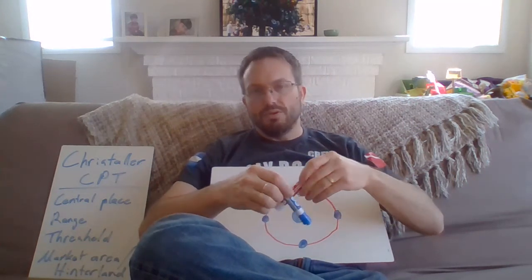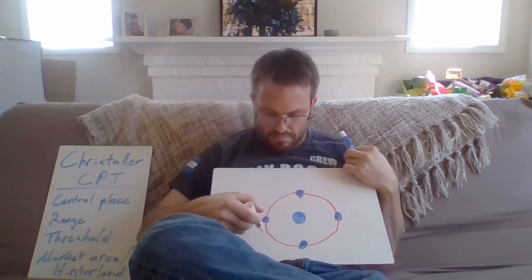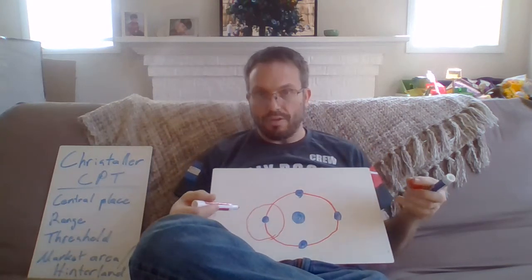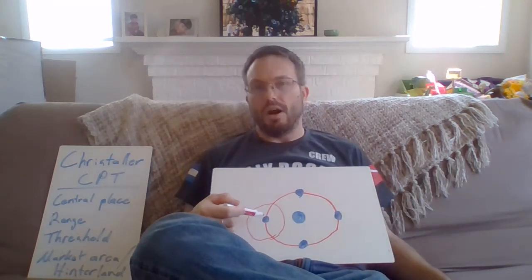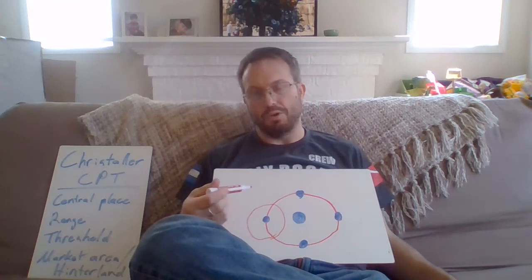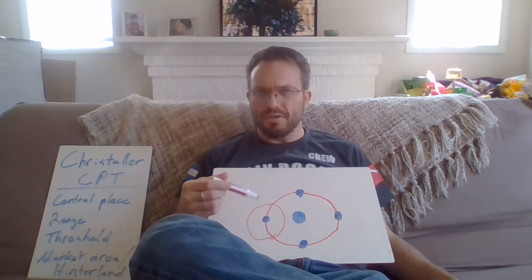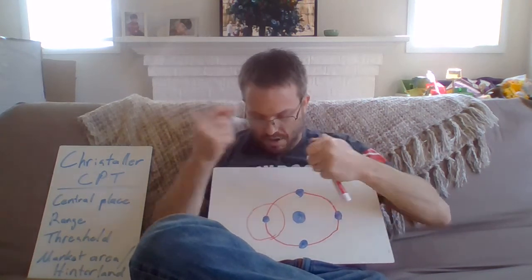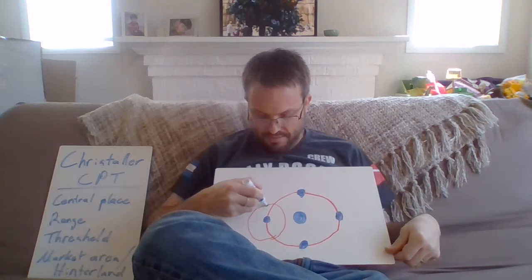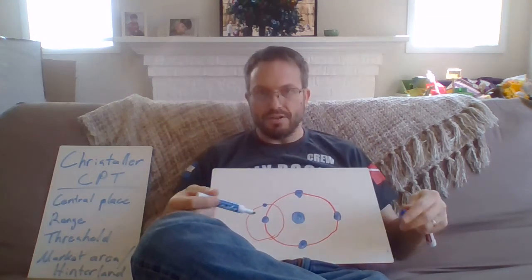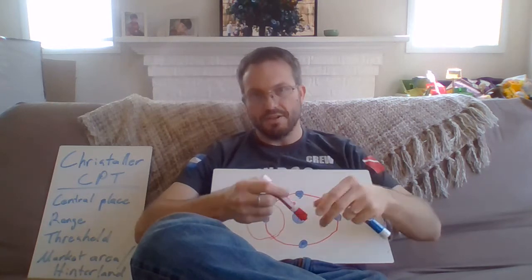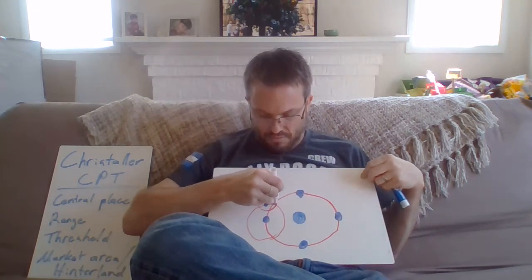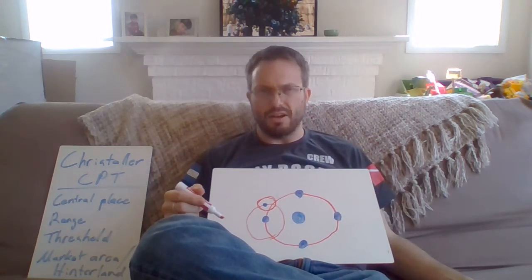Each of those central places has its own market area. That market area tends to cross over with the others. Bremerton itself offers certain services that people are willing to travel for, but a shorter distance because they're not as desirable services. Then you get your much smaller central place, which would be, for us, Silverdale. Different sizes of dots represent the different sizes of the central places. Silverdale also has its own market area — smaller than the rest of them, but still kind of coinciding.